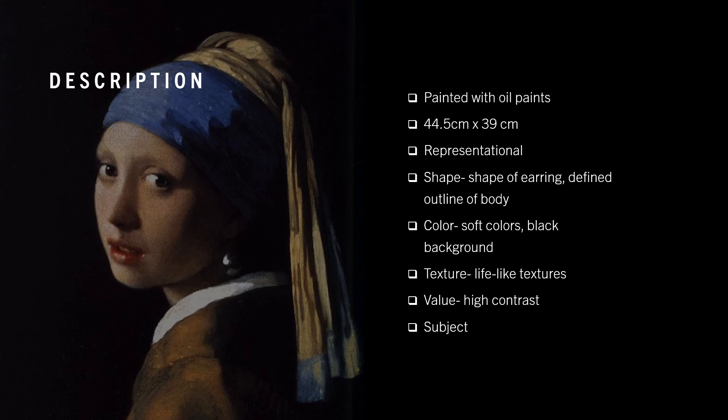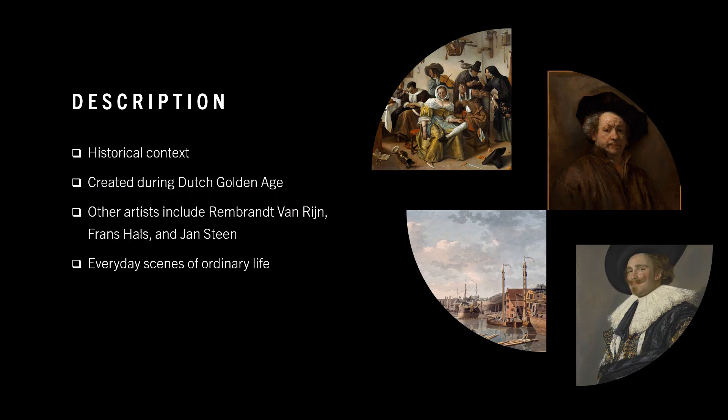Moving on to the subject of the painting: this painting depicts a young woman wearing an exotic dress, an oriental turban, and a large pearl earring. The image shows her from the shoulders up with her body angled away from the viewer, but her eyes looking at the viewer. The entire painting has a mysterious feel, especially because the angle of the woman's body makes it feel like she is inviting the viewer to wherever she is going.